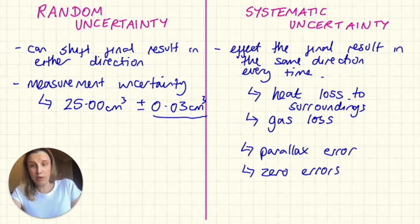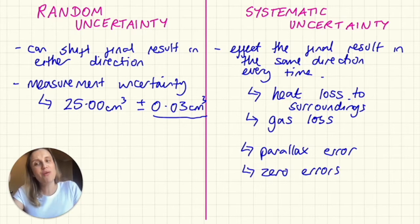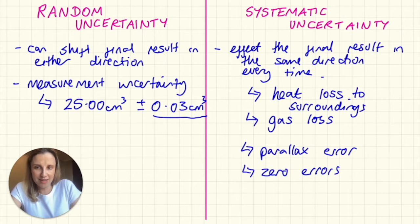And what that means is that even if I'm an amazing scientist using that pipette, I could measure it 0.03 above or below, even if I'm doing the absolute best job that I possibly can. But it could go either way. It could be a bit higher, it could be a bit lower, and I have no way of working out which way it's gone.